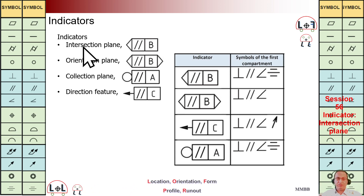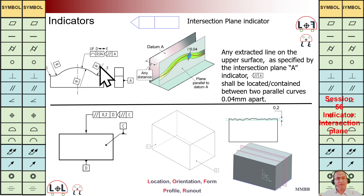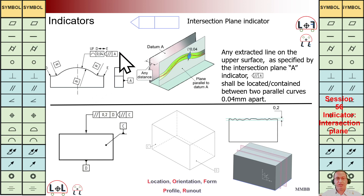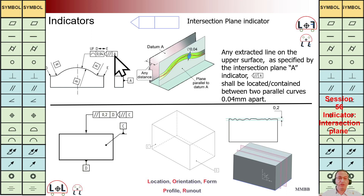Today we are going to talk about the intersection plane indicator. As a first example, we are going to have a profile of a line here, and we have this symbol here which is going to represent the intersection plane indicator. What does it mean?